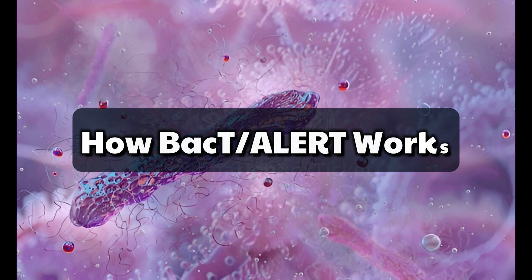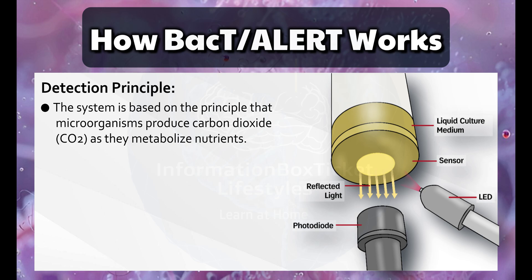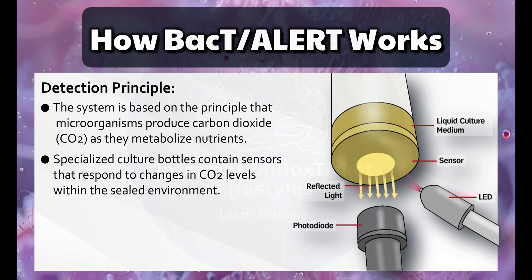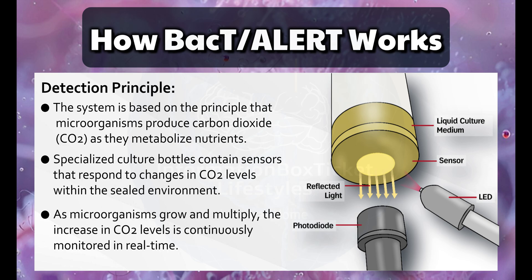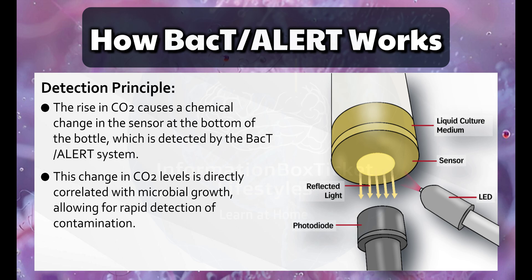How BactiAlert Works — Detection Principle. The system is based on the principle that microorganisms produce carbon dioxide as they metabolize nutrients. Specialized culture bottles contain sensors that respond to changes in carbon dioxide levels within the sealed environment. As microorganisms grow and multiply, the increase in carbon dioxide levels is continuously monitored in real-time. The rise in CO2 causes a chemical change in the sensor at the bottom of the bottle, which is detected by the BactiAlert system, and this change is directly correlated with microbial growth, allowing for rapid detection of contamination.